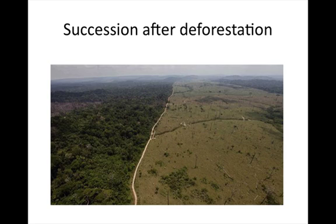You also can have secondary succession after deforestation. This particular picture is in the Amazon. The field on the right once was agricultural. What happens in the Amazon is they cut down large areas of forest, grow crops on them, but don't do it in a sustainable manner. Oftentimes they'll leave that field fallow because they farmed it out and cut down a new section. Succession after deforestation is a form of secondary succession. There are still organisms there. However, sometimes if you use the land for agriculture, you can have pulled so many nutrients out of the soil that it makes it almost impossible for the ecosystem to turn back into its original climax community.